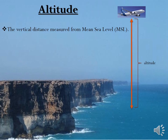The next definition is Altitude. The vertical distance measured from Mean Sea Level is called altitude. So whenever we are measuring from Mean Sea Level, we consider it as altitude, and when we are measuring from AGL — Above Ground Level — we call it height.